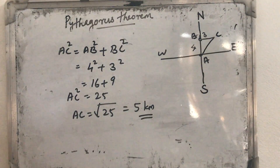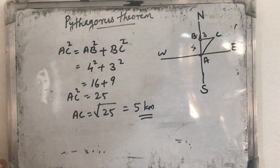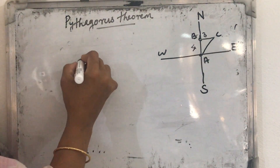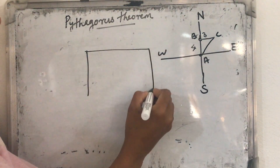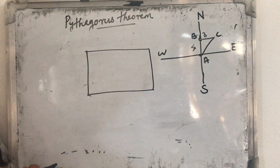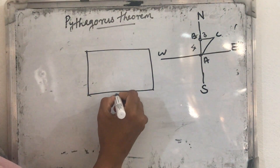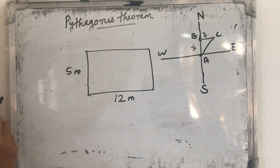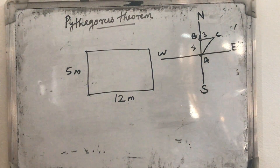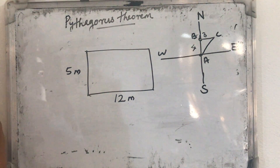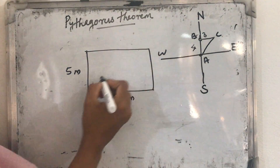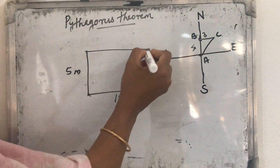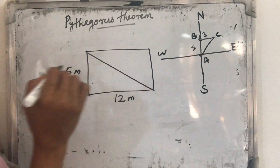Next question: the sides of a rectangle are 12 meters and 5 meters. I will just give you the clue — this is a rectangle. The longer side is 12 meters and the breadth is 5 meters. What is the length of the diagonal? The diagonal is the line segment drawn from one vertex to the opposite vertex.